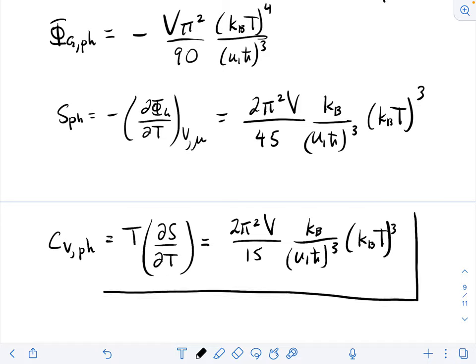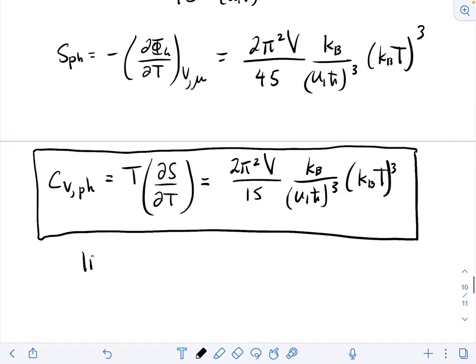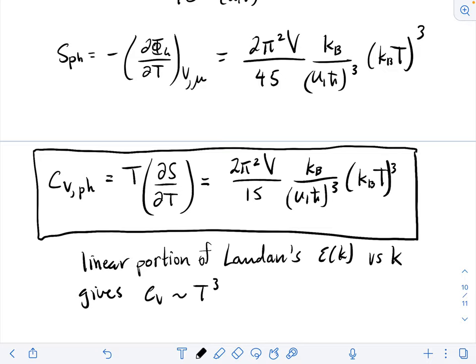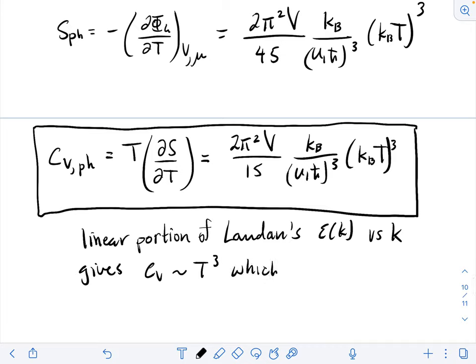So here we see that the linear portion of Landau's epsilon k versus k gives CV proportional to t cubed, which agrees with the experimental data at very low temperatures.